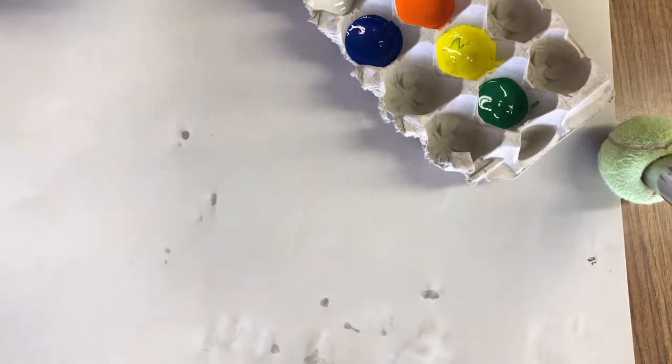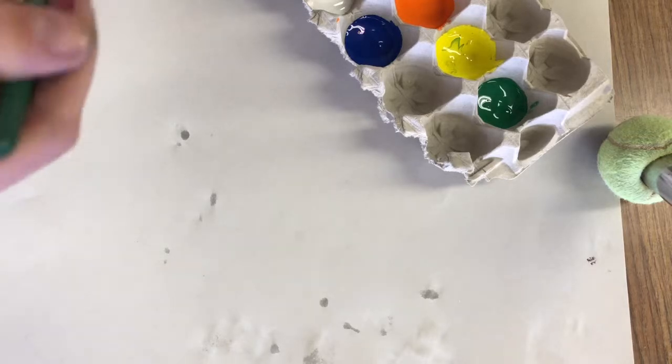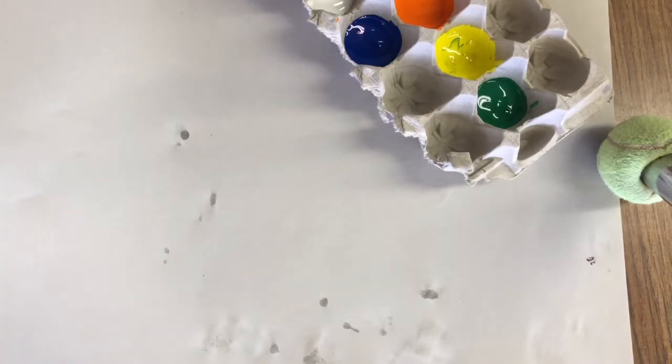We're going to paint with tempera paint today. I got a little water on my paper and that's what those marks are, but they're not going to show up once my paper dries so I'm not going to worry about it. The first thing that you need to do is write your name on the back of your paper.